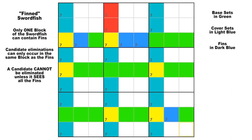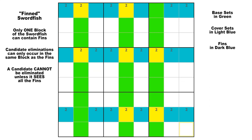Let's see what this looks like when the base sets are in the columns. Here in this diagram, we have a basic swordfish on candidate 2 in columns 2, 5, and 7. These are the base sets, and the cover sets are rows 1, 4, and 8. Remember that if the base sets are in the rows, the eliminations will be made in the columns. And if the base sets are in the columns, then the eliminations will be made in the rows. So in this case, all the candidate 2s in the light blue colored cells are false.